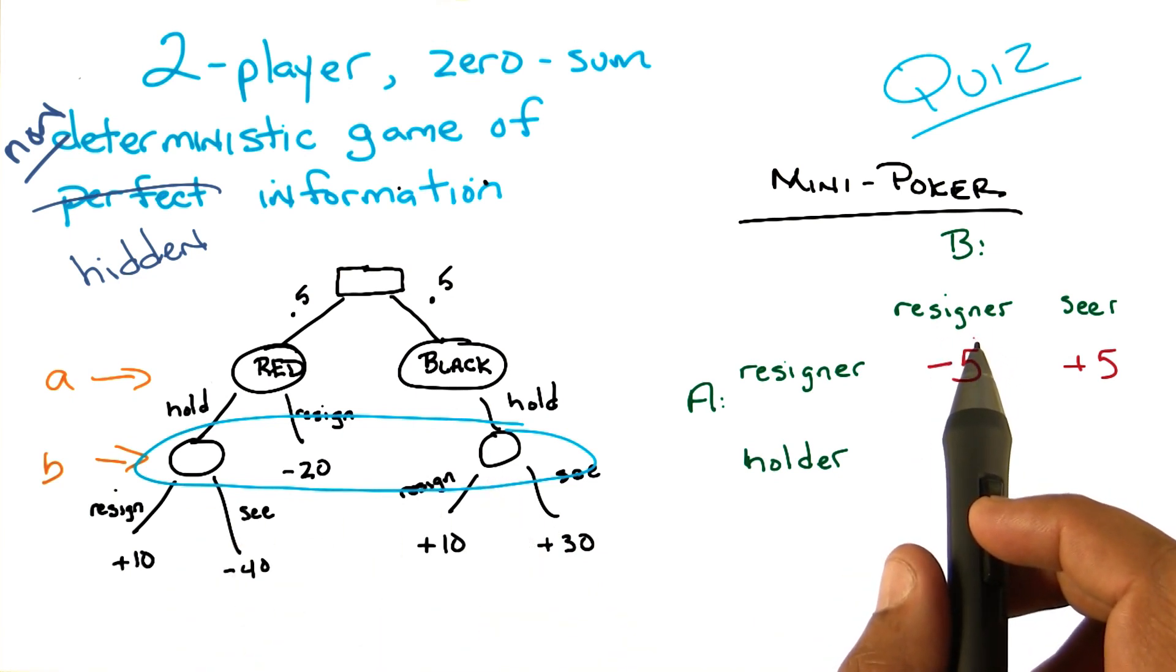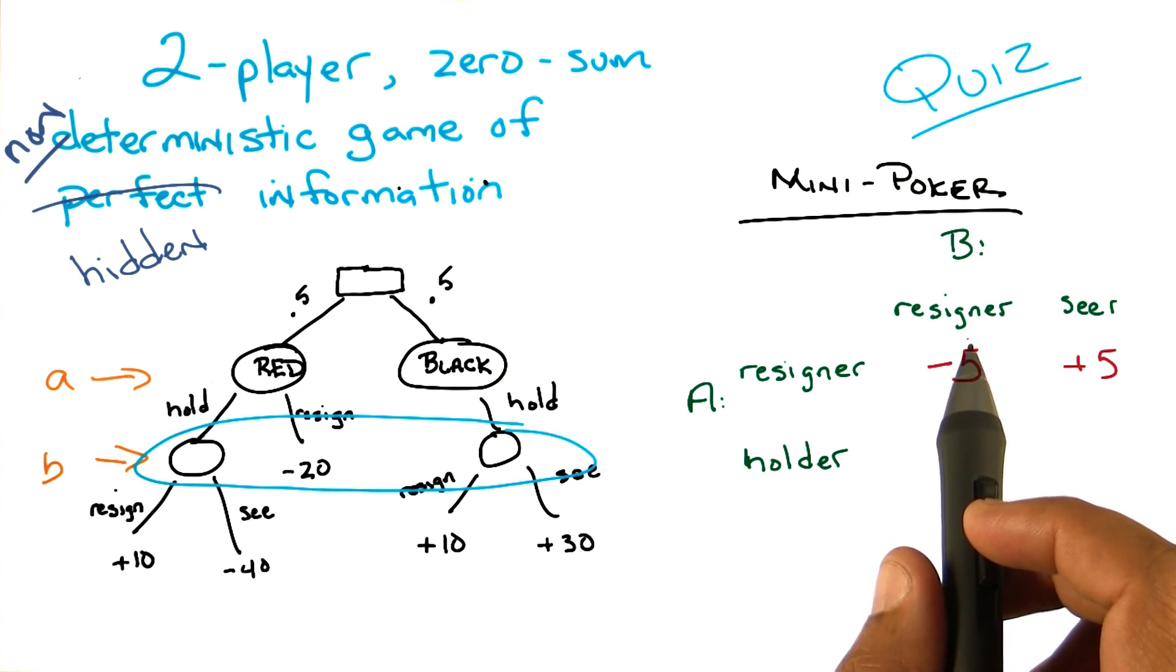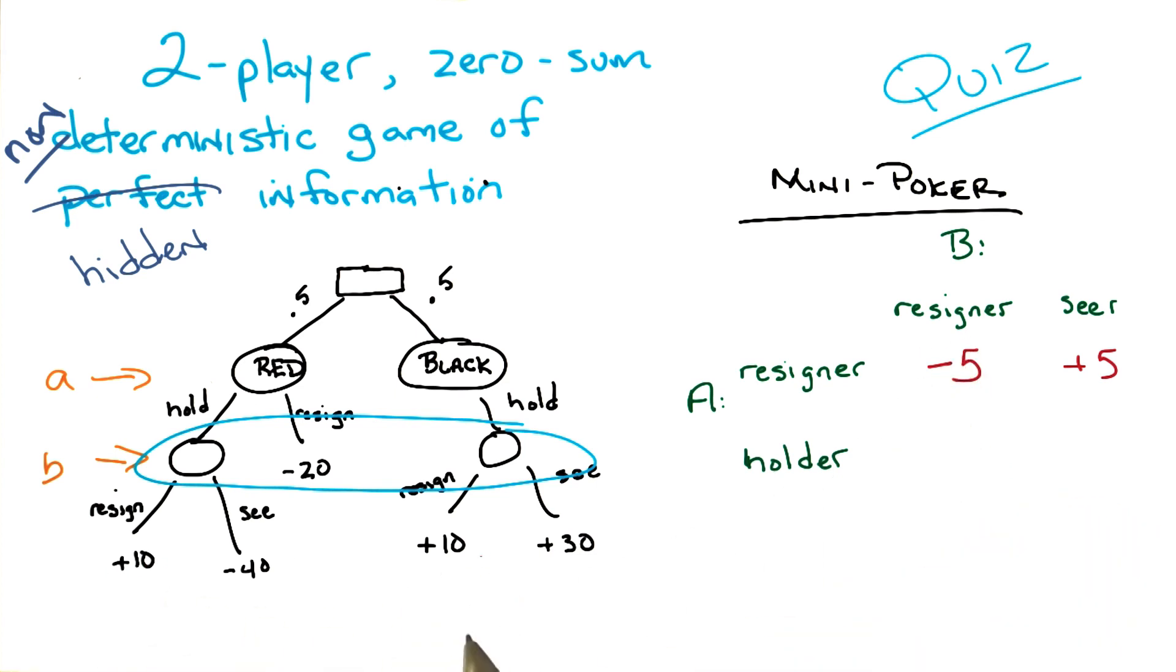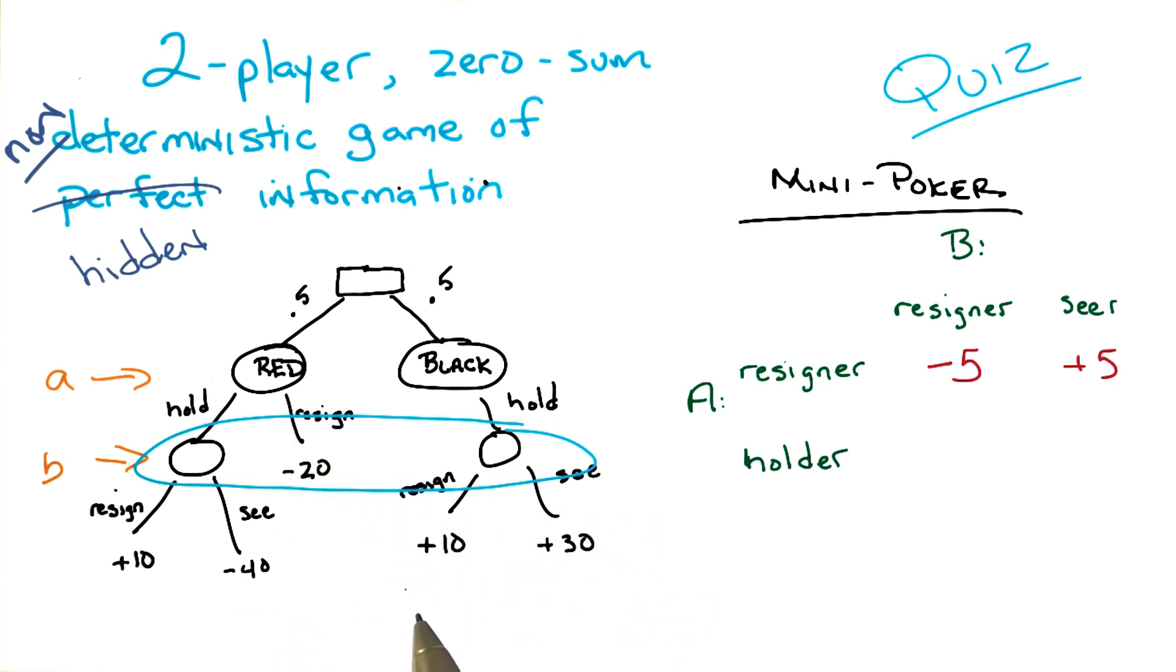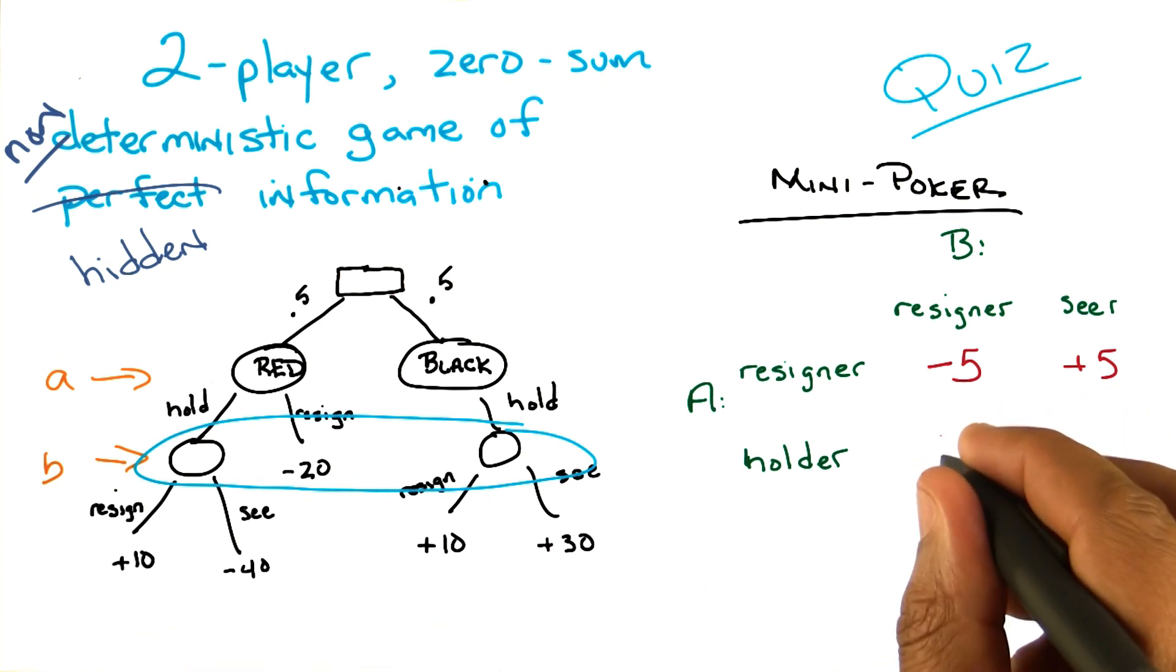So, oh, well, interestingly, I think that takes us to those two leaves, both of which are plus 10. Yep. Because, why does that make sense? Because B, oh, because B doesn't get any, no. Right, right, right, because it's independent of the card. You actually said that when you explained the rules. So it's the average of plus 10 and plus 10, which ought to be plus 10. It is, in fact, plus 10. Well done.